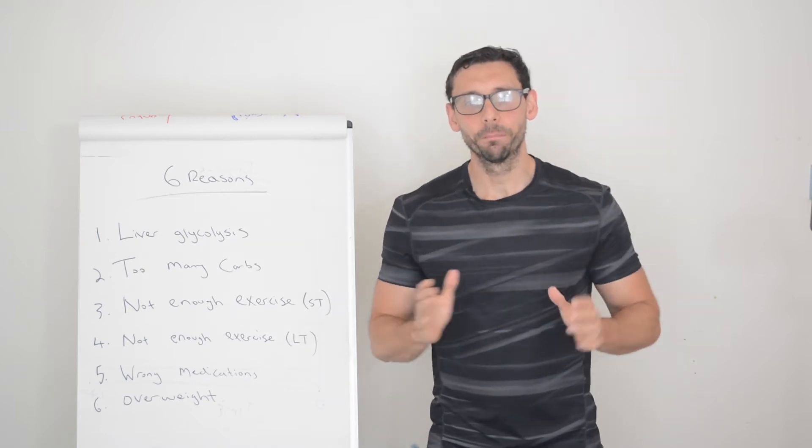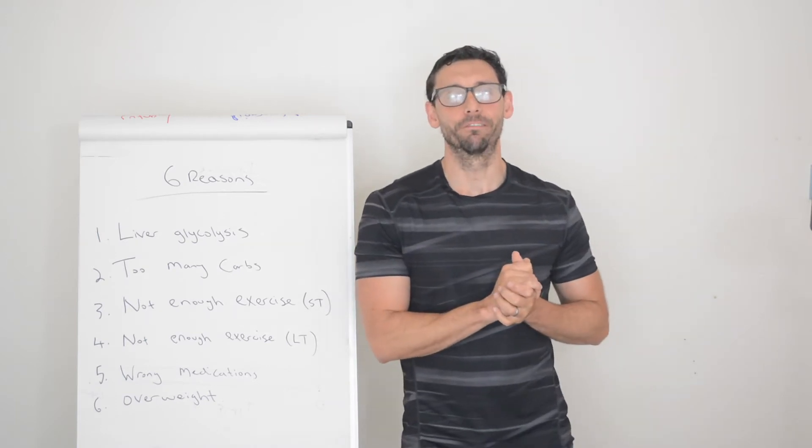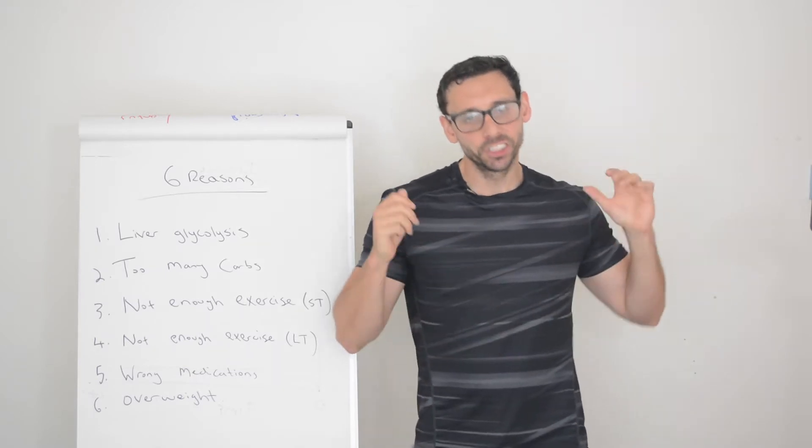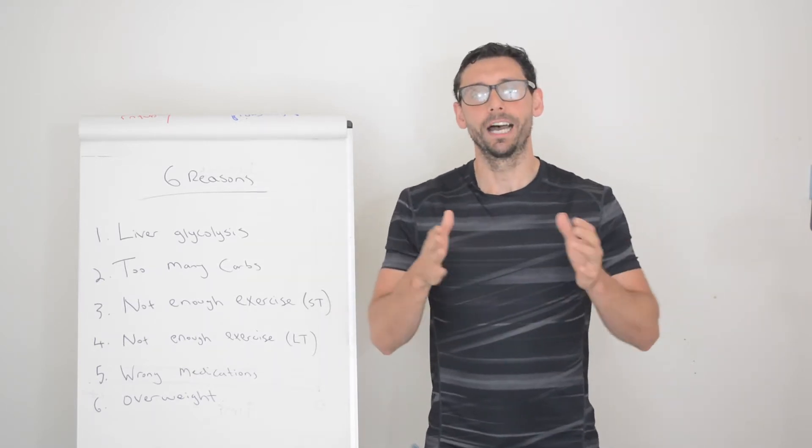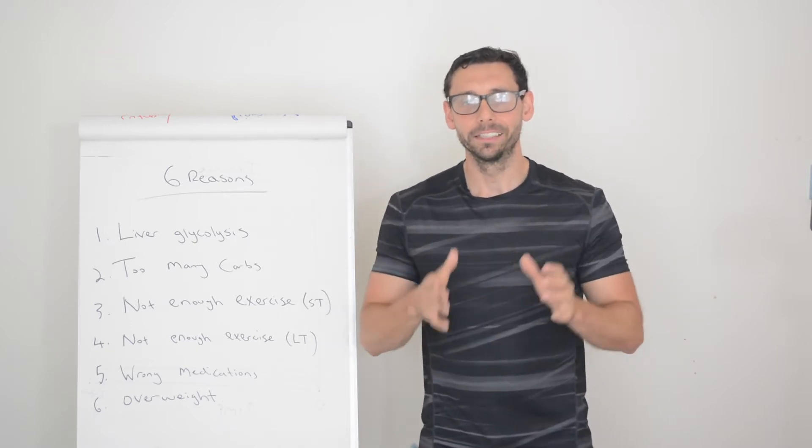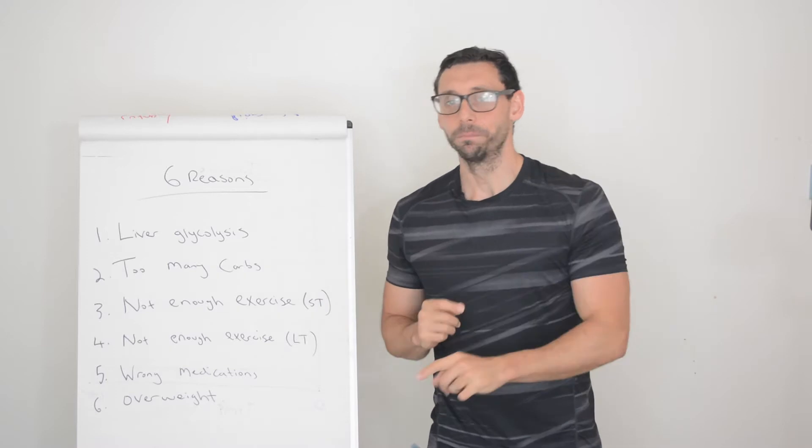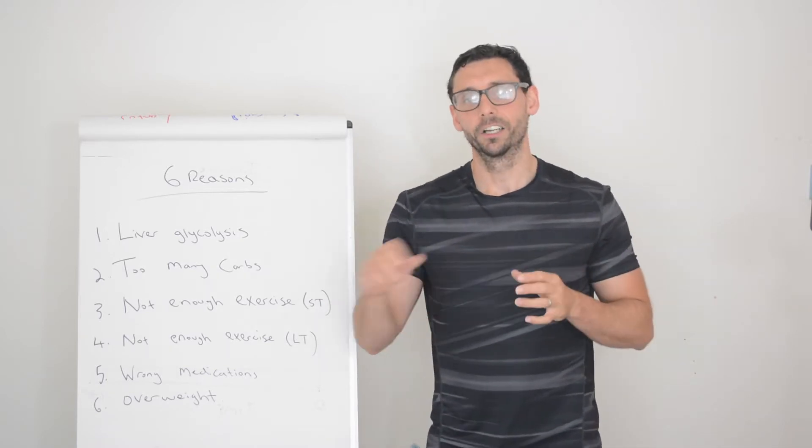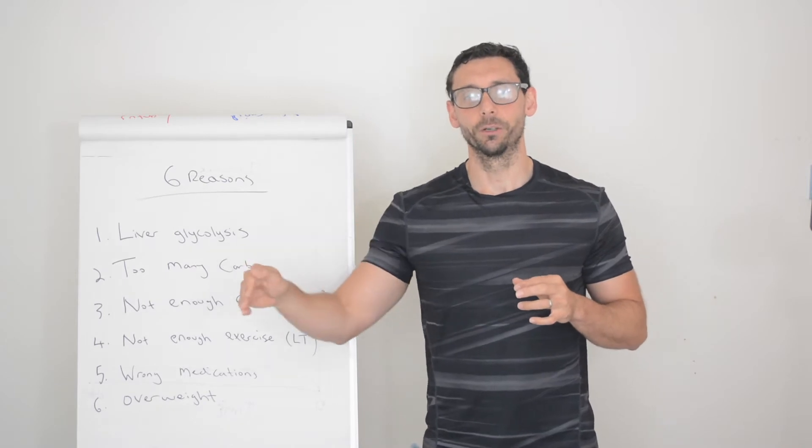What's up everybody? Welcome back to another video. Mark Green here from DiabetesDietGuy.com and today we are talking about six reasons why you have high blood glucose levels with type 2 diabetes and what you can do about it. Because I'm nice like that, I'm not just going to tell you what's causing it. I'm going to tell you ways that you can help address those issues.